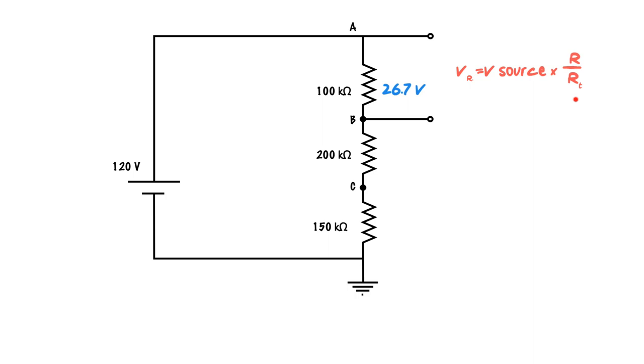We're going to go ahead and we're going to use our formula again. The V source times that ratio equals the V of the resistor. So we're taking 100 divided by 450k ohms and multiplying it by 120, we get 26.7 volt drop.